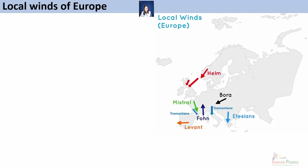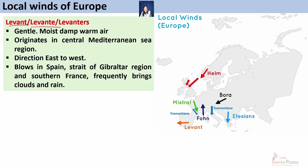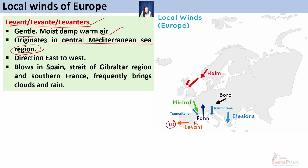Another important wind of Europe is Levant, also called Levante or Levanters. These are the same names for a particular wind that blows from the Mediterranean region towards Spain. Since they originate from a water body, they are gentle, moist, and damp warm air originating in the Central Mediterranean region, blowing in an east-to-west direction. Their main areas of influence are Spain, the Strait of Gibraltar region, and southern France. They frequently bring cloud and rain since they are moisture-laden warm winds, leading to rainfall along the eastern coast of Spain and inland areas.